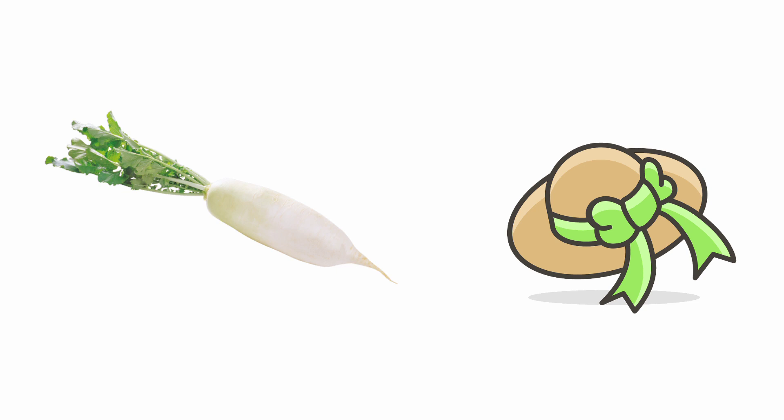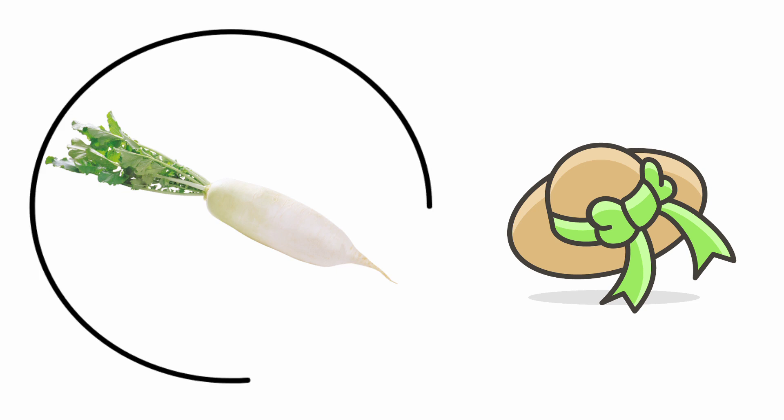Next one — Radish and Hat. The beginning sound of the picture Radish is R, and the sound of the letter R is R. So we are going to circle the picture Radish.